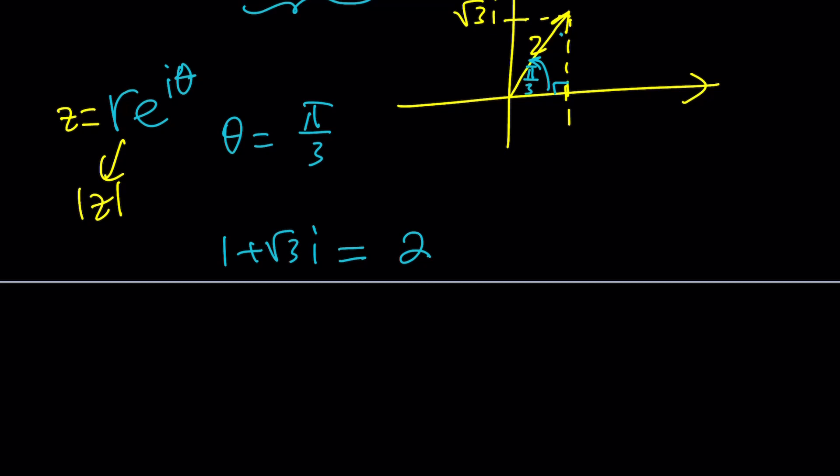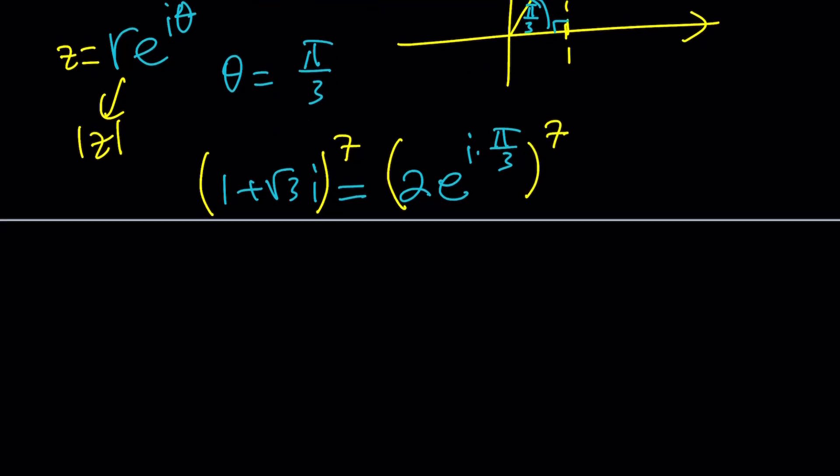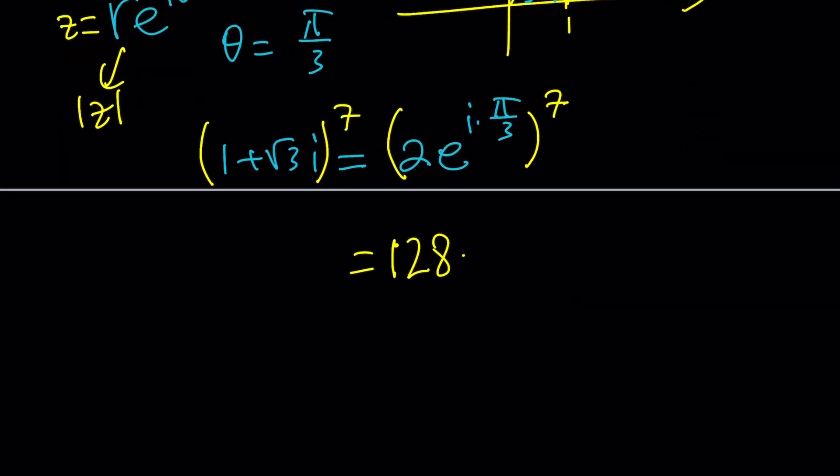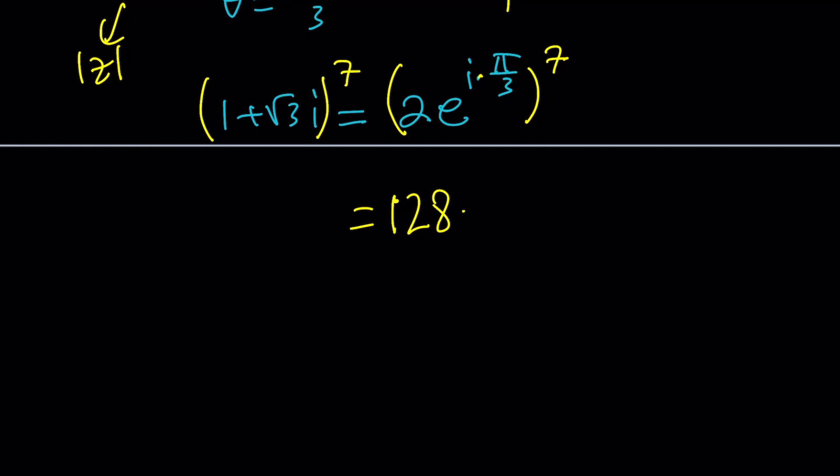So theta is pi over three. So that gives us the following: one plus root three I becomes two, which is the modulus, times E to the power I times pi over three. Now we're supposed to raise both sides to the seventh power. And that would be a piece of cake. Why? Because you can just raise two to the seventh, which is 128. Wait a minute, didn't we get 64 something? Don't worry about it. We'll get there.